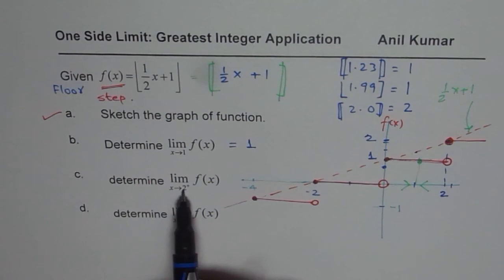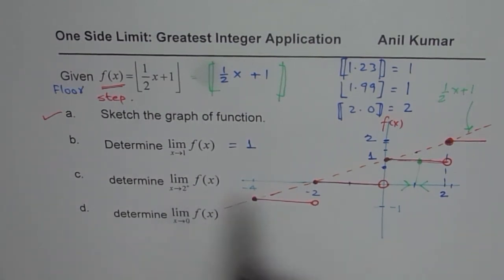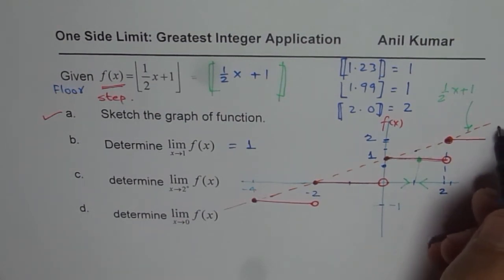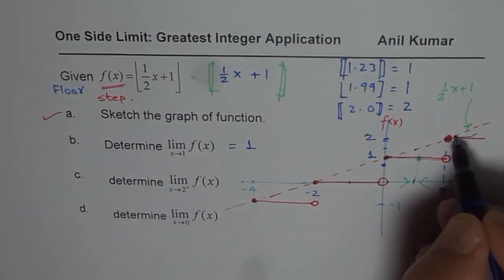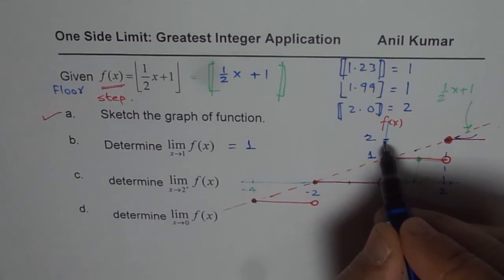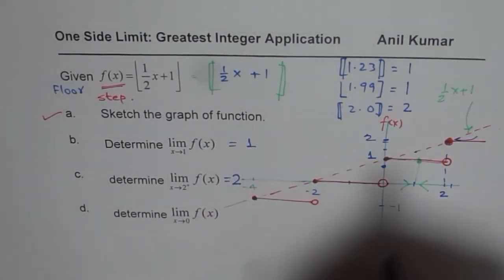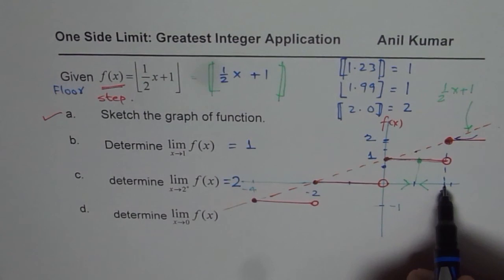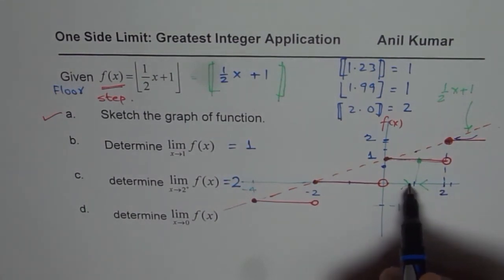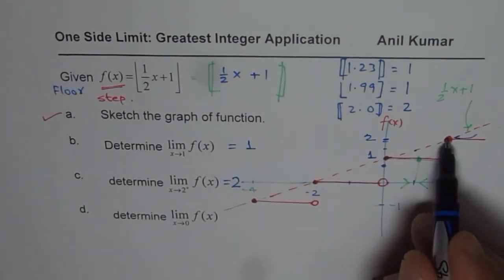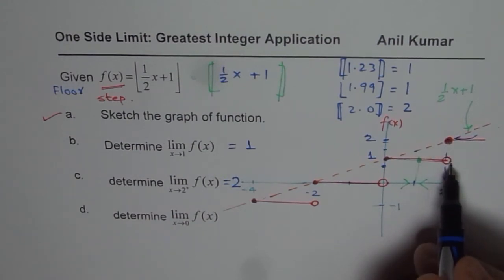For the limit as x approaches 2 from the right side (2⁺): approaching 2 from the right, the graph value is 2, so that answer is 2. Note that approaching 2 from the left gives 1, so the two-sided limit does not exist — there is a jump discontinuity at x equals 2.